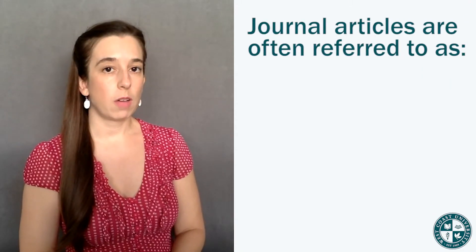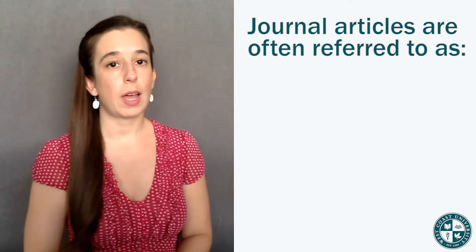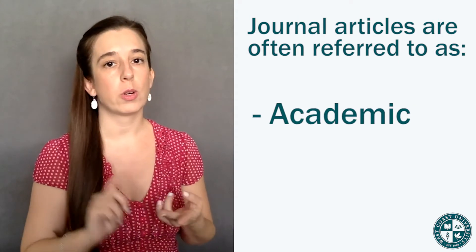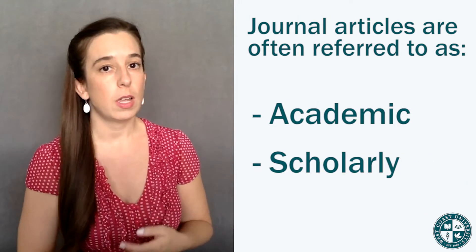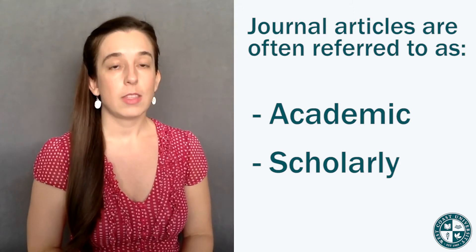So let's work backwards. Let's talk about journal articles first and how they differ from other types of sources, and we'll work our way back to those databases. Journal articles are often referred to as academic journal articles or scholarly journal articles — these all refer to the same thing.